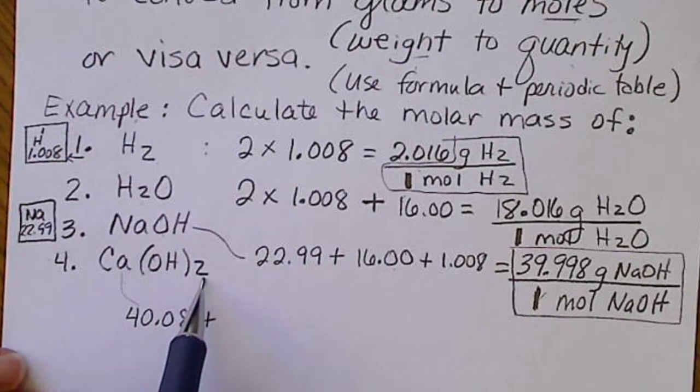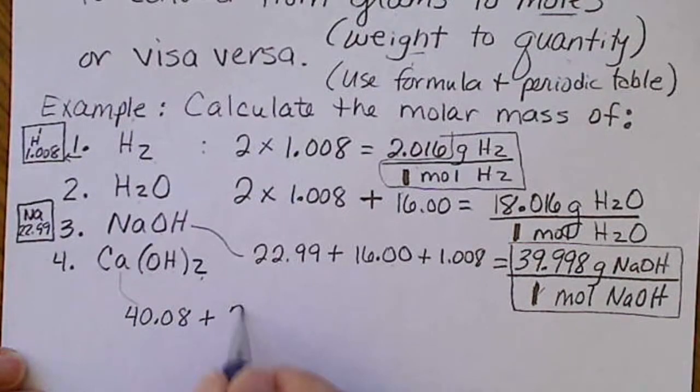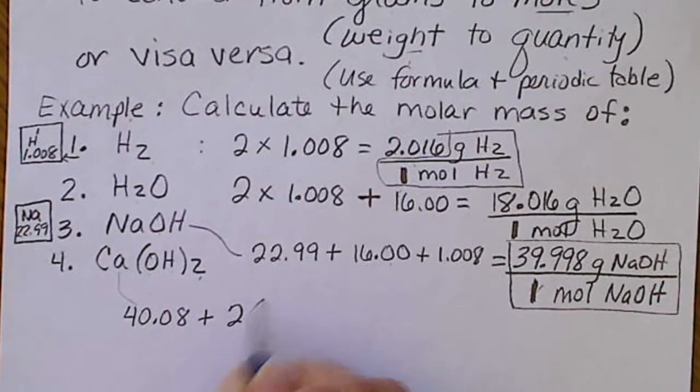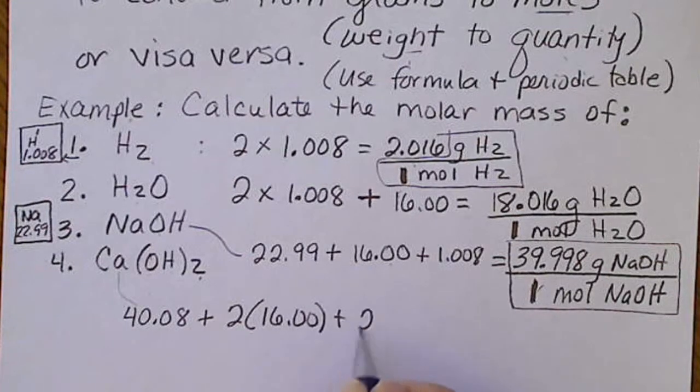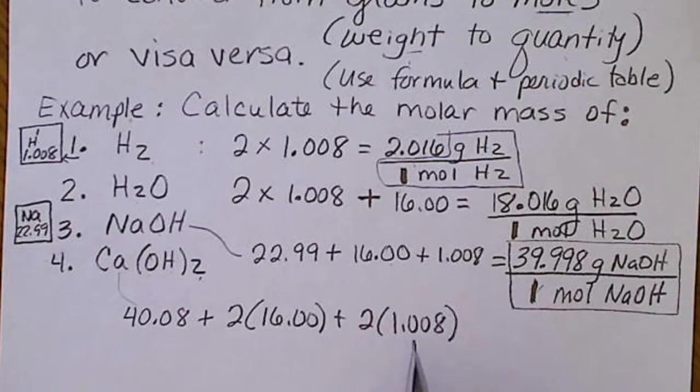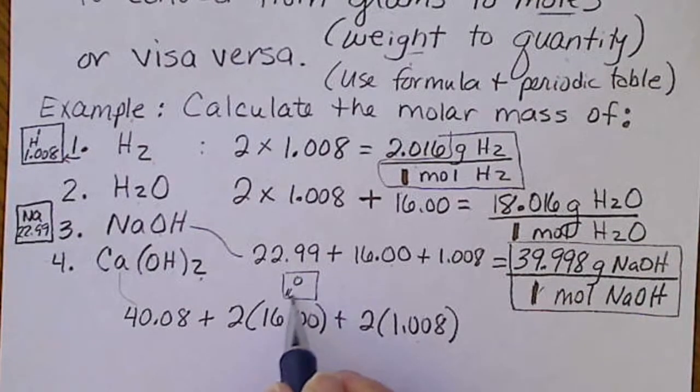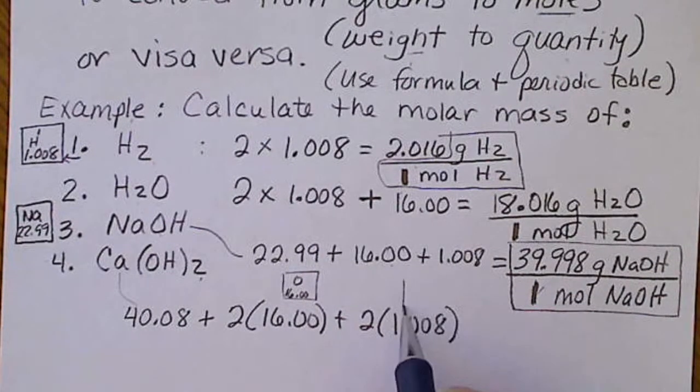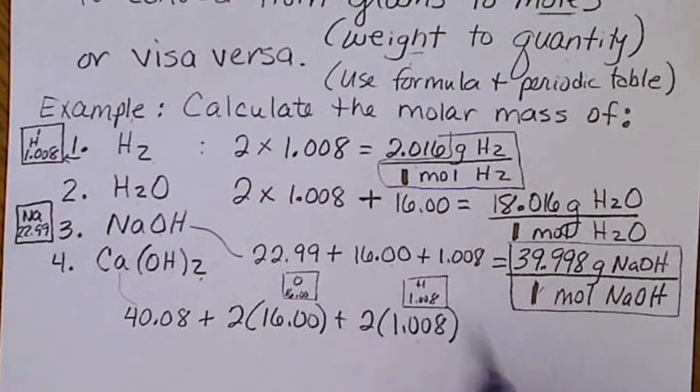This 2, outside the parentheses, goes with everything inside. So there are two oxygens, so this is 2 times 16, plus 2 times 1.008, because there are also two hydrogens. This is the number that comes off the oxygen atom from the periodic table, and that number comes from the hydrogen.